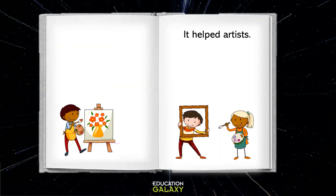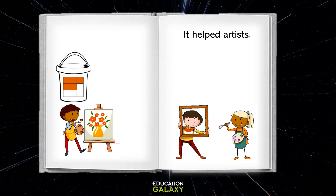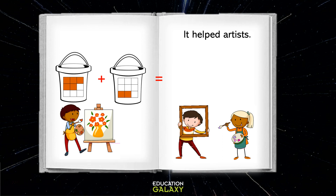It helped artists. I used five-ninths of a gallon of paint to make this beautiful painting of flowers. I used two-ninths of a gallon of paint to paint my vase. How much paint did you both use altogether? Well, to calculate that, we would have to add five-ninths plus two-ninths. The law says we can do that because they have common denominators. We add the numerators — five plus two equals seven — and keep the denominator nine. So our answer is seven-ninths.